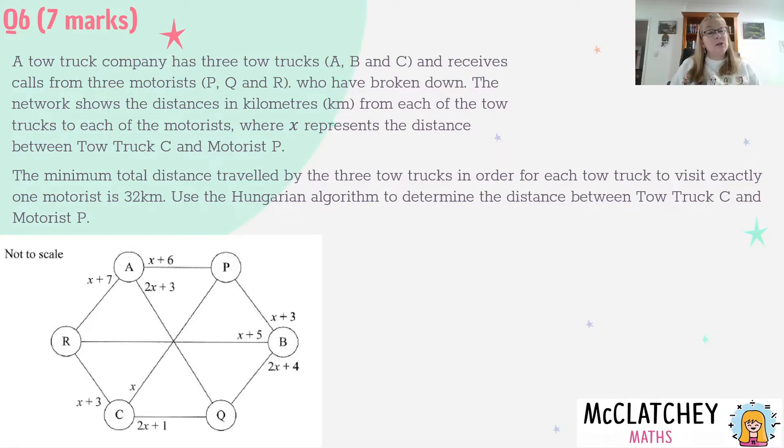Now it's tempting and it's also possible to actually work out every possible combination. There's nine combinations of allocations between tow trucks and motorists and you could use algebraic expressions, set each one equal to 32 and then work out the lowest possible value for X.